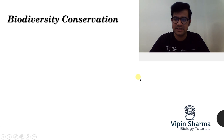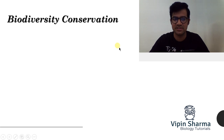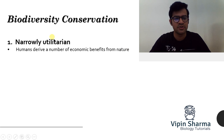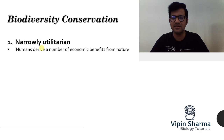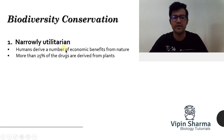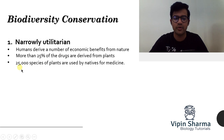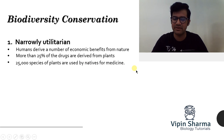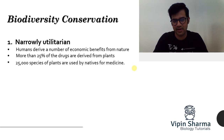Now the question is why we need to conserve this biodiversity. Definitely there are certain utilities which biodiversity is giving to us. It breaks down into narrow utilitarian, meaning there are certain services that biodiversity gives to us which have a direct economic benefit to man. For example, more than 25 percent of drugs are derived from plants and over 25,000 species of plants are used by natives for medicines. So we are drawing direct economic benefits from nature — that's why we need to conserve it.